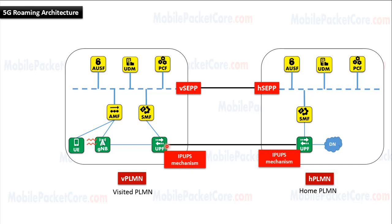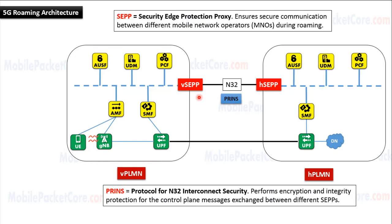This IPUPS mechanism is used by the UPF in the visited network and the UPF in the home network. SEPP refers to Security Edge Protection Proxy. It ensures secure communication between different mobile network operators during roaming. The visited SEPP is installed at the edge of the visited network and the home SEPP is installed at the edge of the home network. The interface between the visited SEPP and the home SEPP is named N32 interface. N32 interface uses a protocol named PRINS Protocol in its application layer, which refers to Protocol for N32 Interconnect Security. This protocol performs encryption and integrity protection for the control plane messages exchanged between different SEPPs.